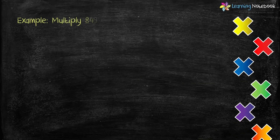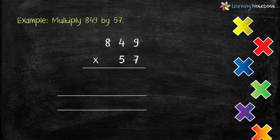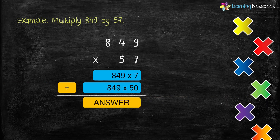Let's do one more example: multiply 849 by 57. Let's first understand the three steps. First, write them in columns. In step 1, we will multiply 849 by 7. In step 2, we will multiply 849 by 5 tens, or 50. And then in step 3, we will add both of these products to get the answer.